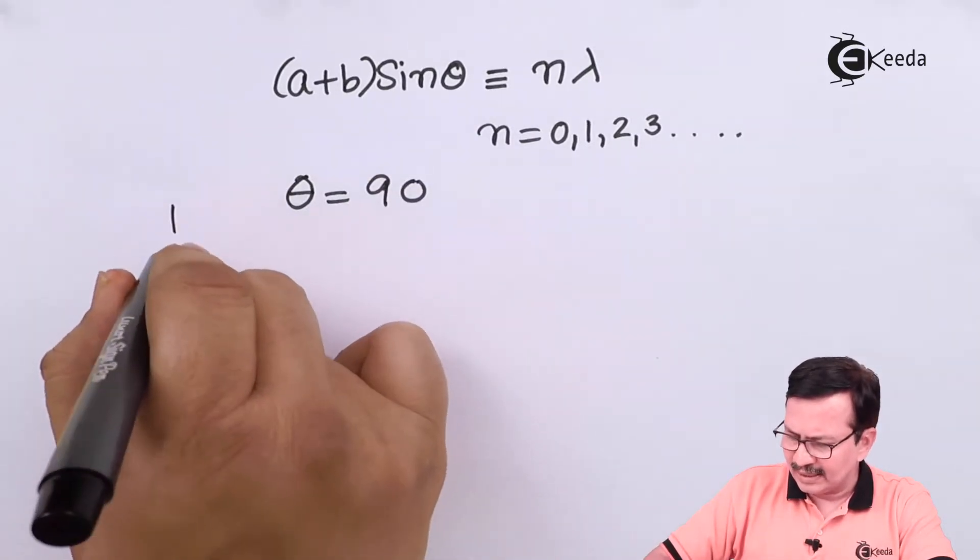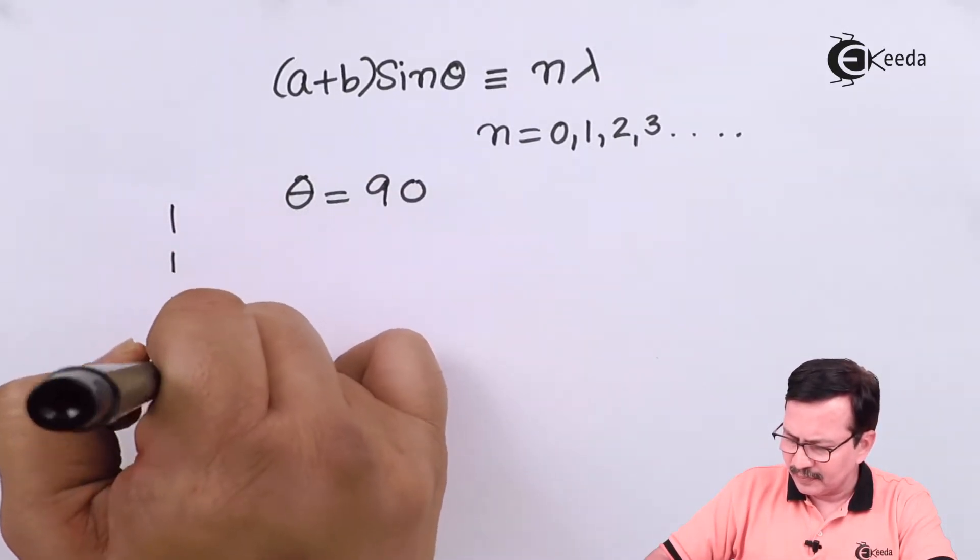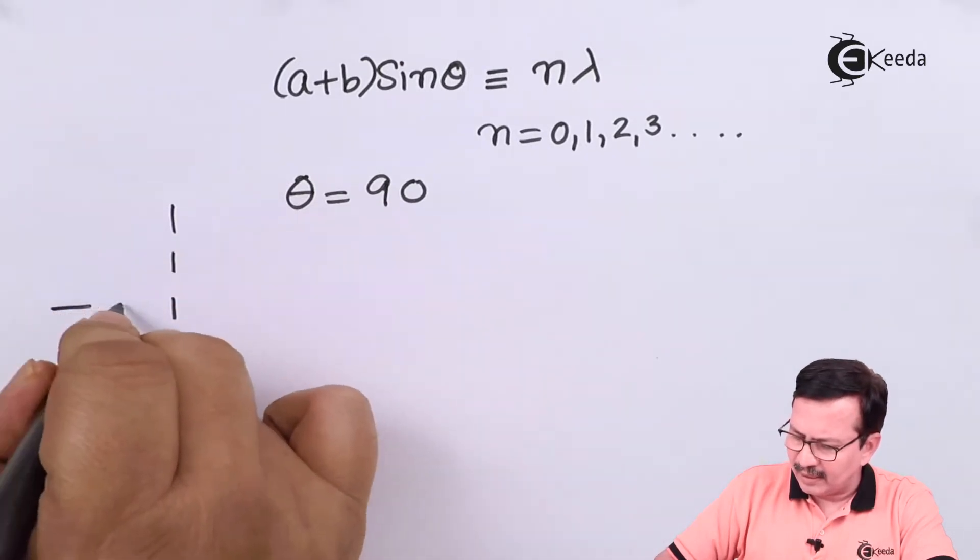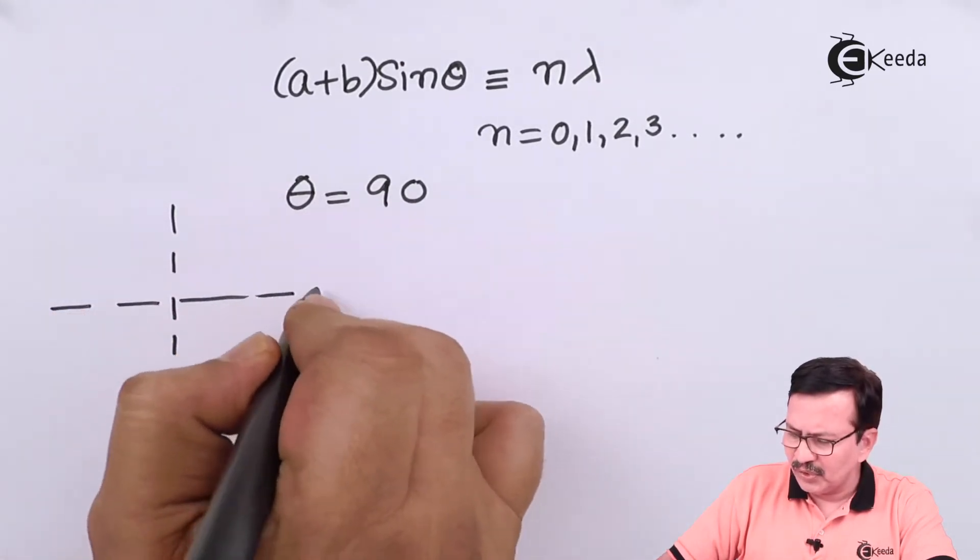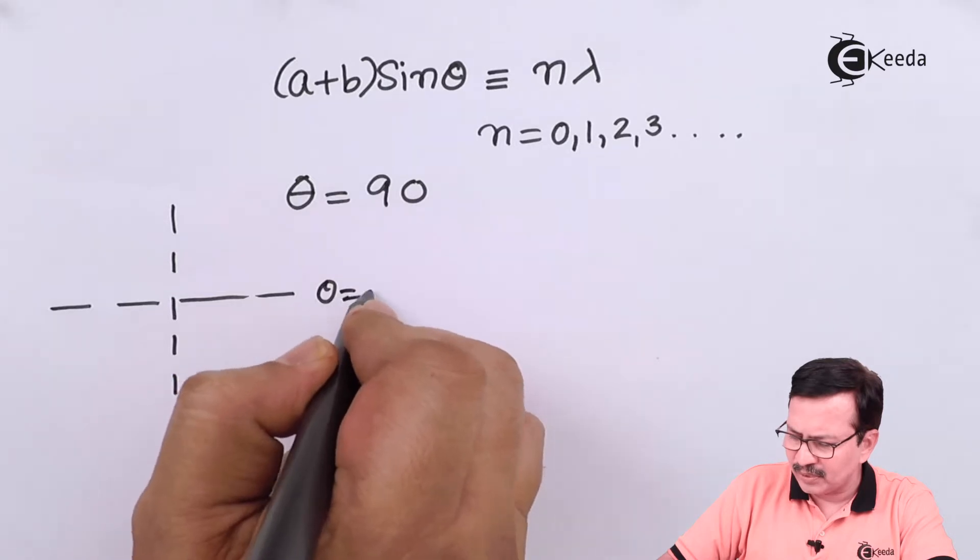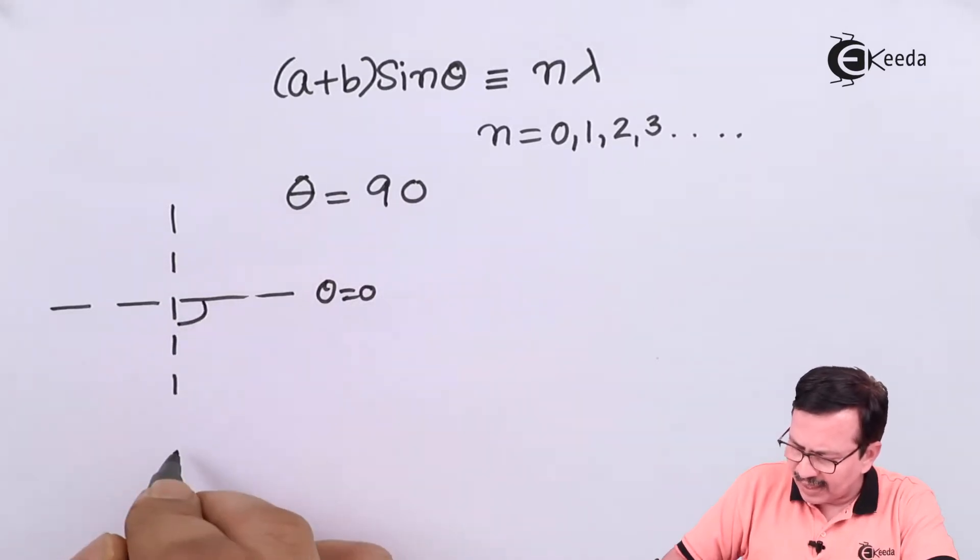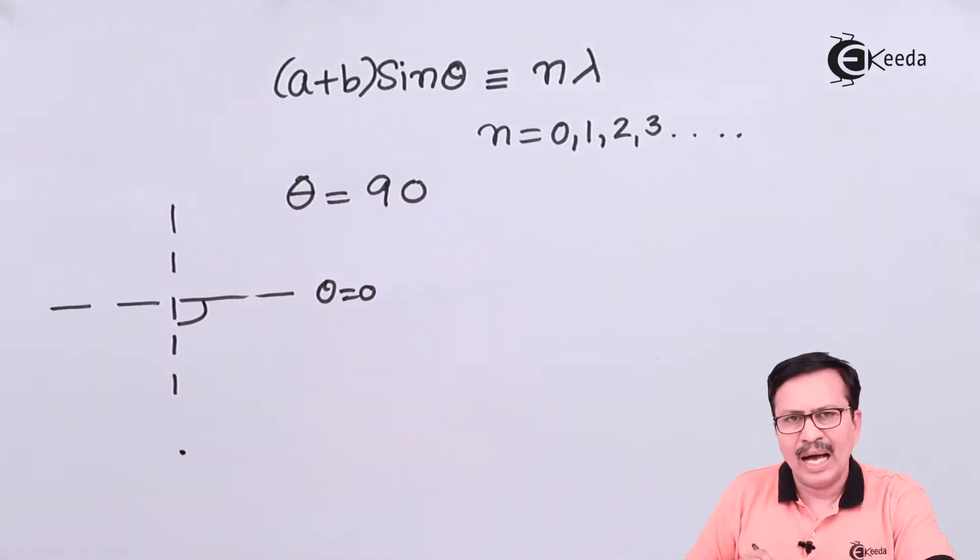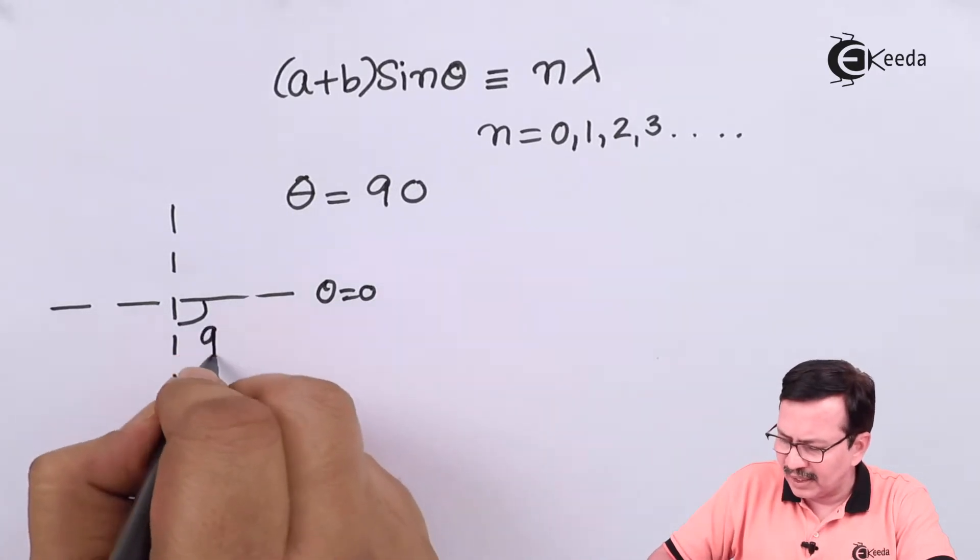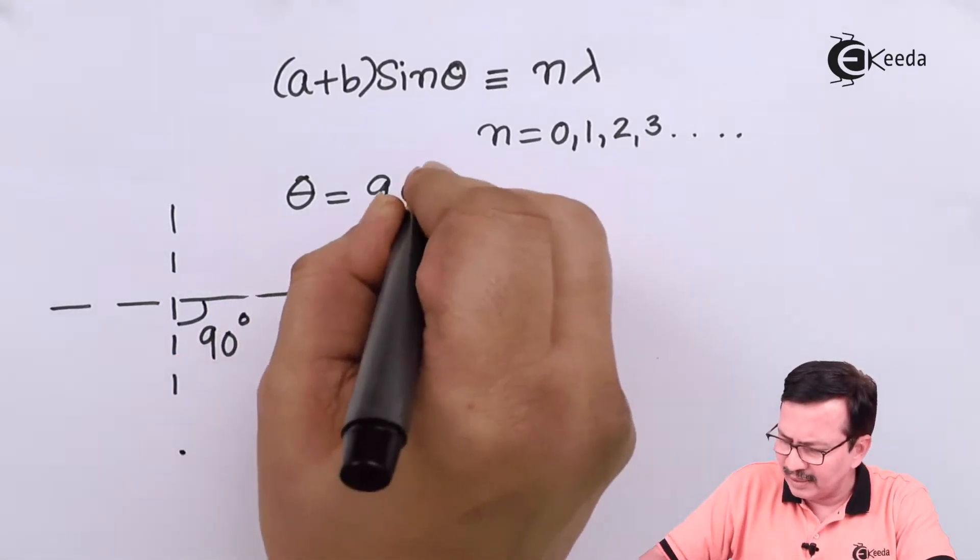So let us consider that this is the grating and this is zero over here, theta is equal to zero. So the maximum order will actually be available over here hypothetically if your theta is equal to 90 degrees.